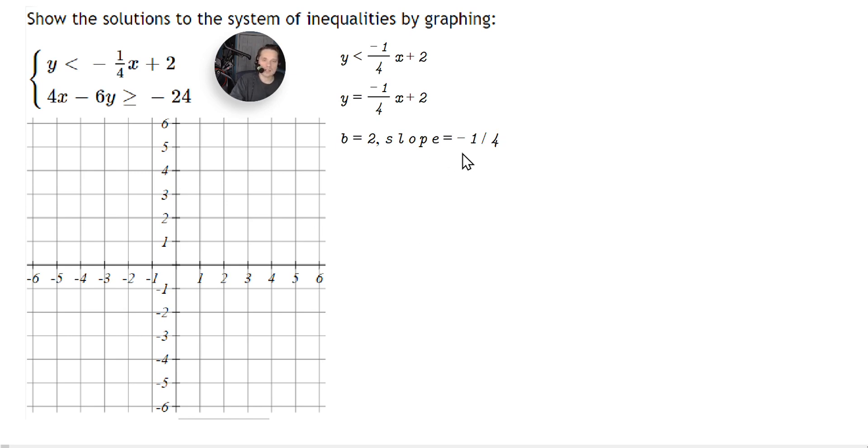So then we can mark this as follows. Now remember, because we have this symbol, that means it's got to be a dashed line. Besides that, we also have to know where to shade, kind of like above or below the line.